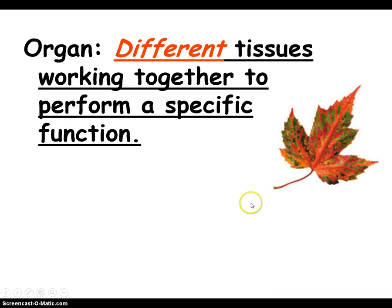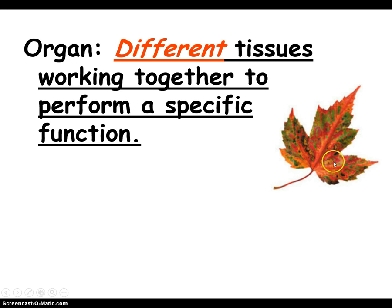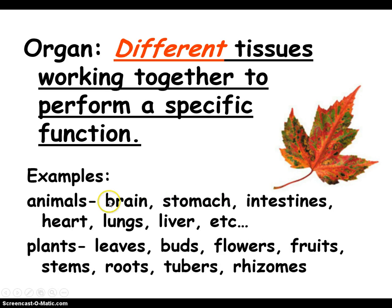If we take different tissues, we get an organ, and an organ performs a specific job. So this whole leaf is an organ because it has vascular tissue that transports stuff, and then it has parts of the leaf that do food production and other functions. In animals, it would be things like your brain or your intestines, and in plants it's things like buds, flowers, roots, and tubers — like potatoes.